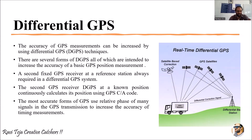This secondary GPS receiver, known as DGPS, is placed at a known position and continuously calculates its position using the GPS C/A code. Whichever satellite signal it receives, that signal carries a C/A code, and based on that it calculates its position. The most accurate forms of GPS use the relative phase of many signals in the GPS transmission to increase the accuracy of timing measurements.